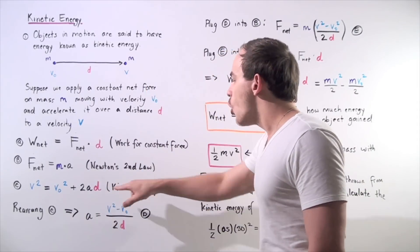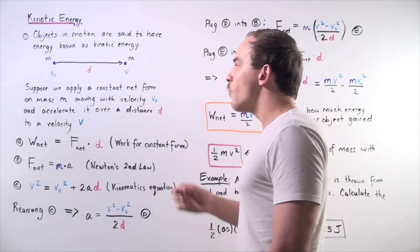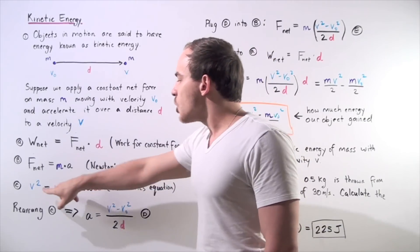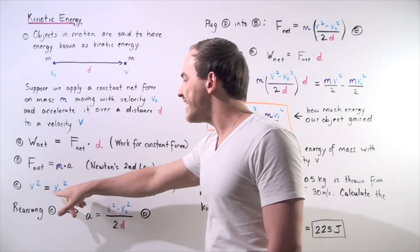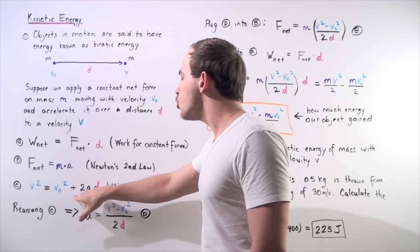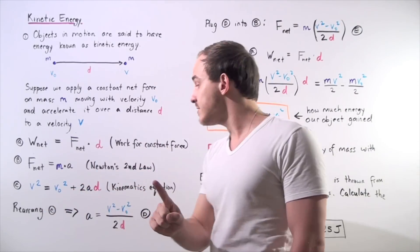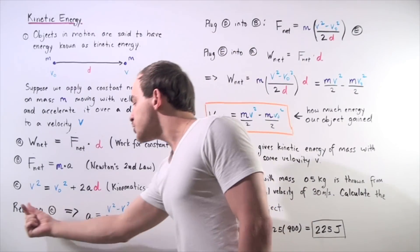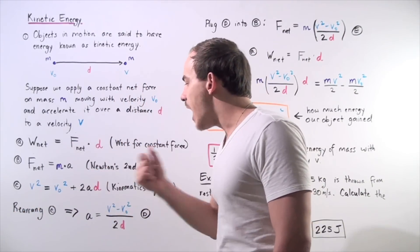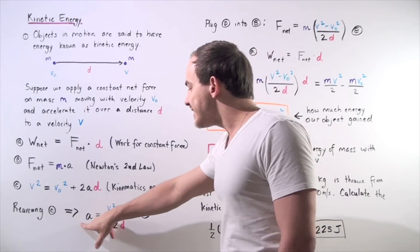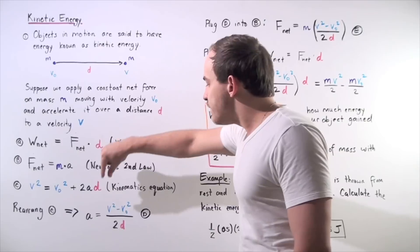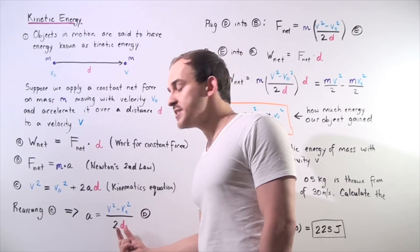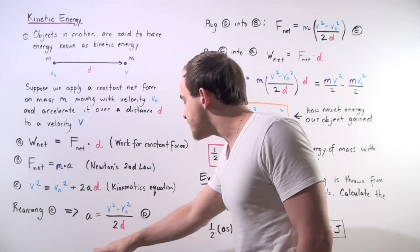Because we have constant acceleration, we can use one of our kinematics equations for uniform acceleration. Using the equation: the final velocity squared equals the initial velocity squared plus two times our constant acceleration multiplied by our displacement. Rearranging and solving for acceleration A, we get: acceleration A equals V-final squared minus V-initial squared, divided by two times our displacement. Let's call this equation D.